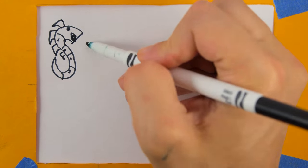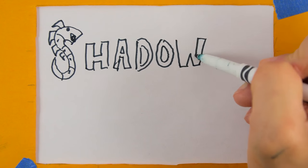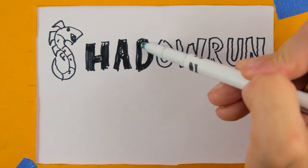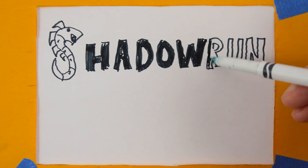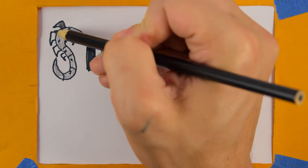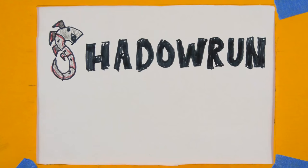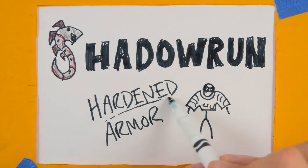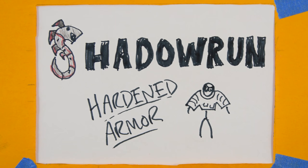In Shadowrun 5th edition, some critters and characters have natural or specialized armor which makes them particularly difficult to damage. This armor is much tougher than the armor you're accustomed to shooting through. If you're going to have any success in piercing their protection or utilizing it yourself, you'll need to know the rules for hardened armor.